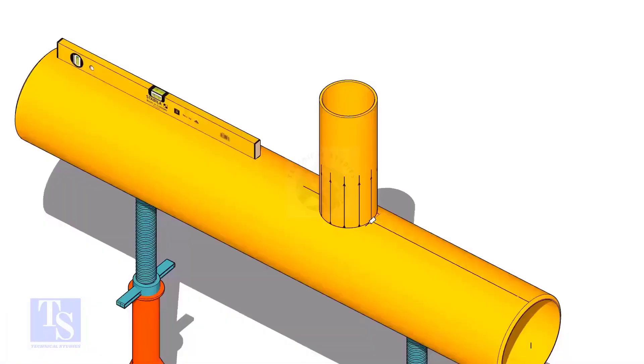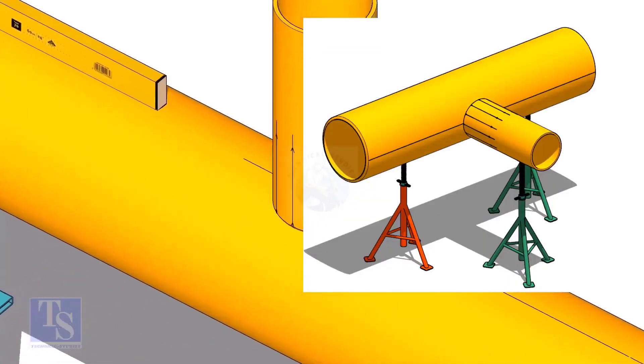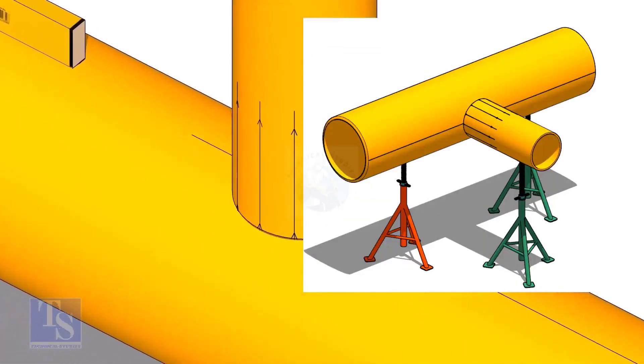Tack weld the branch on the header just to stand it vertically. If the pipes are large, you can do it in the horizontal position also.